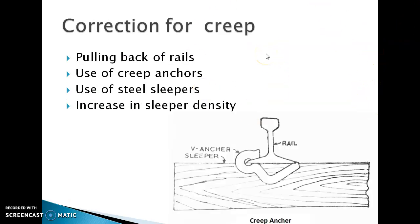The corrections for creep include: pulling back of the rails, since creep is the expansion of rail; use of creep anchors — curved and V-shaped anchors — to avoid creepage; use of steel sleepers, which are better than wooden sleepers; and increasing sleeper density to reduce creep.